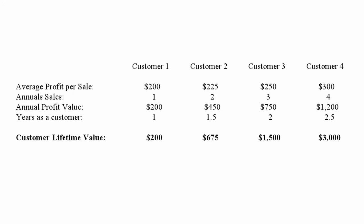Below, as you can see on your screen, is an example that illustrates customer lifetime value. We've got four different customers here. The average profit per sale for customer one is $200, ranging up to $300 for customer four. Annual sales range from one for customer one up to four for customer four. Annual profit value is $200 for customer one, up to $1,200 for customer four. Years as a customer ranges from one to two and a half — though it depends on your situation of course.